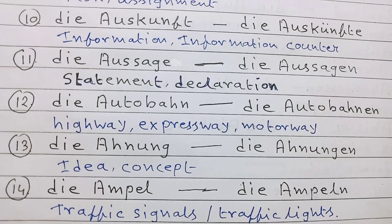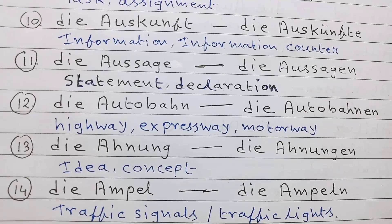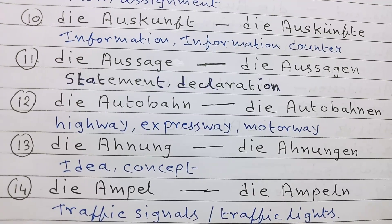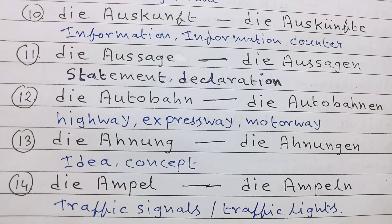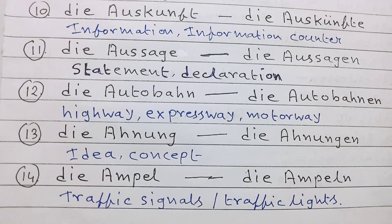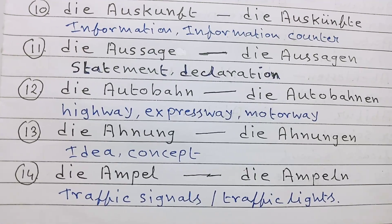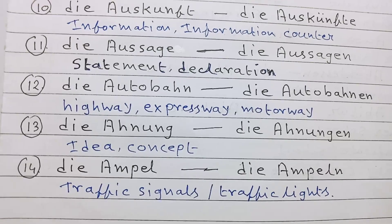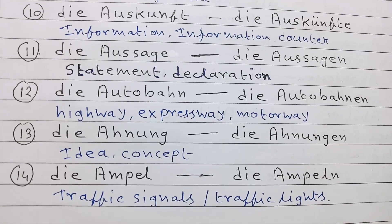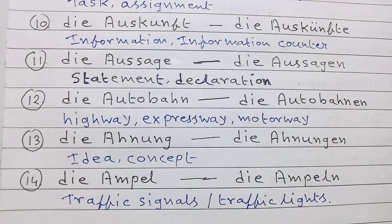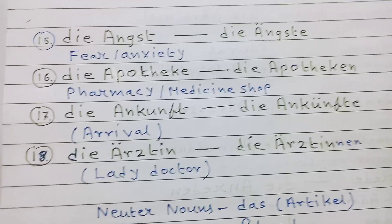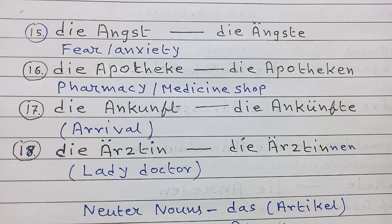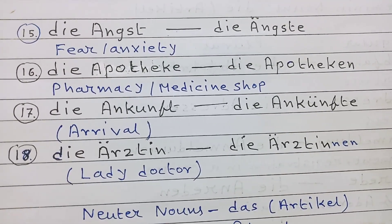Number 13: die Ahnung, die Ahnungen — idea or concept. Number 14: die Ampel, die Ampeln — traffic signal or traffic lights. Number 15: die Angst, die Ängste — fear, anxiety.